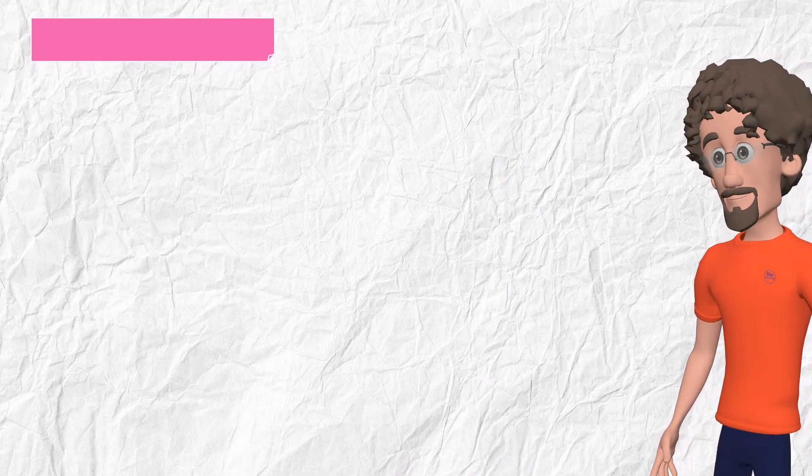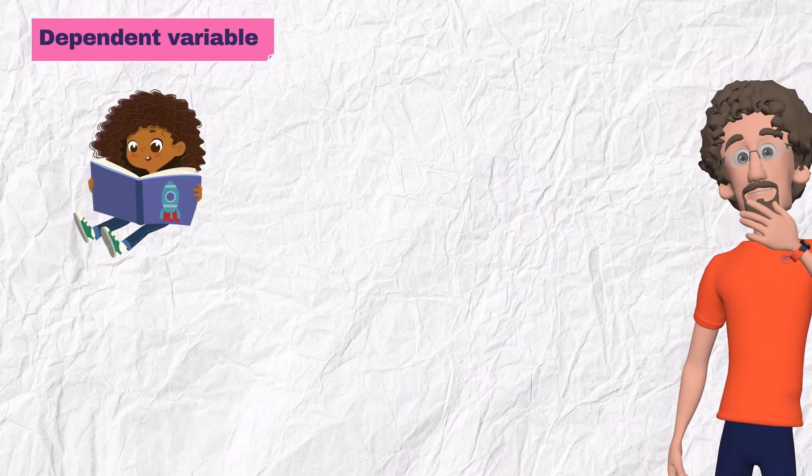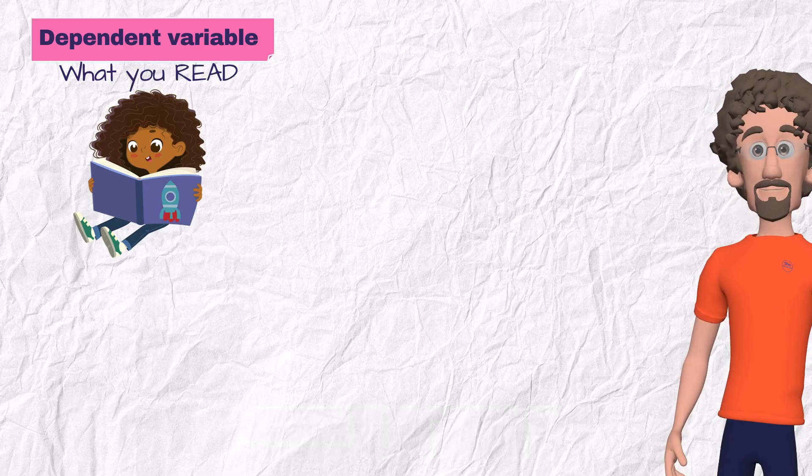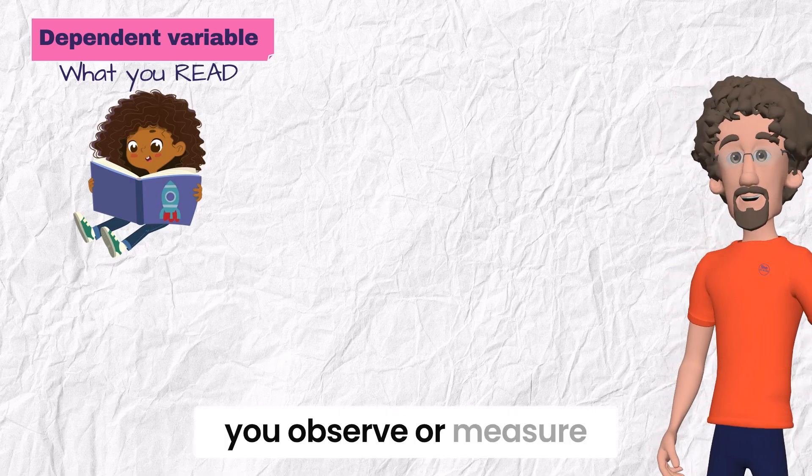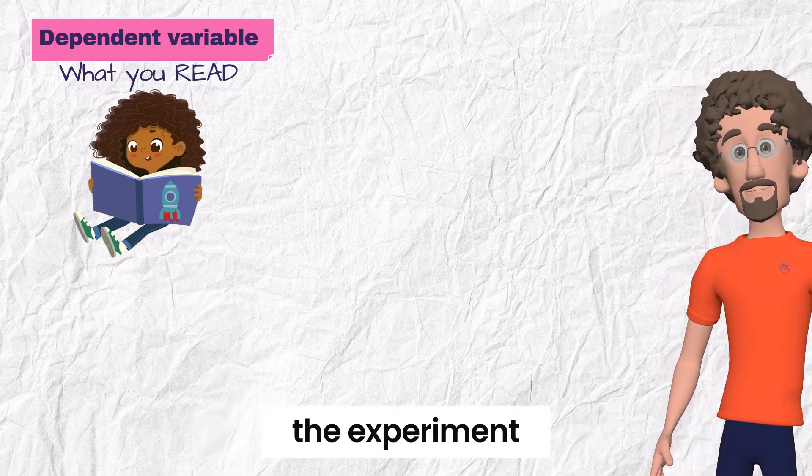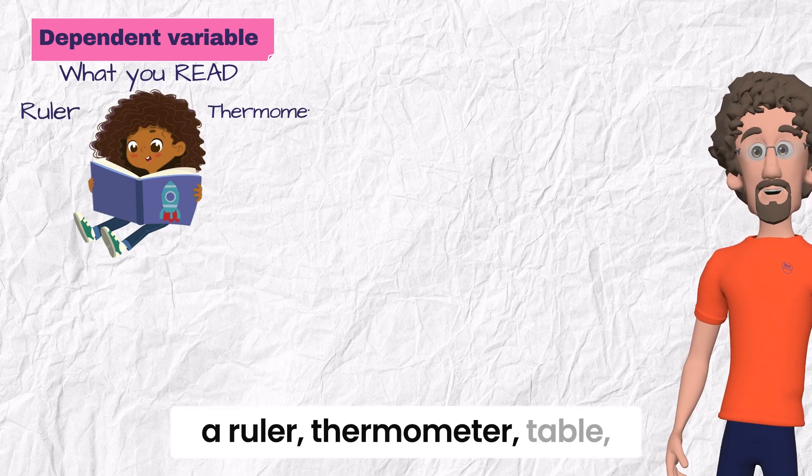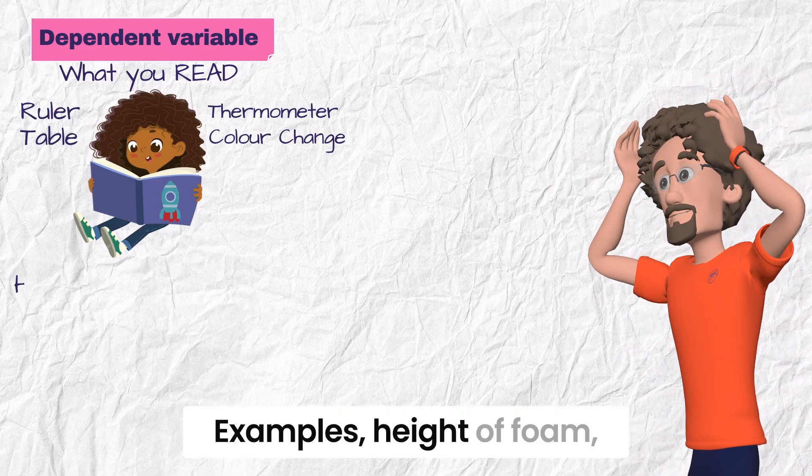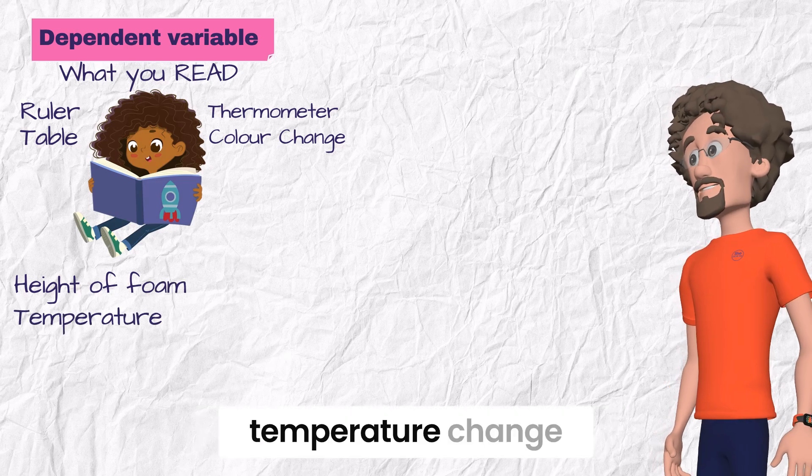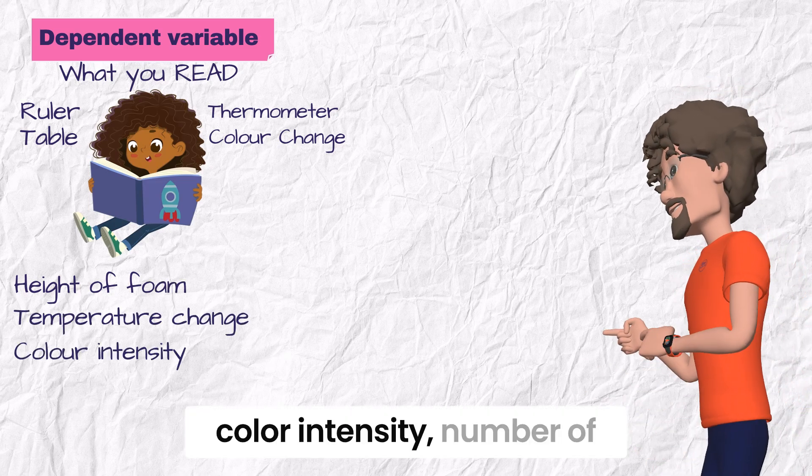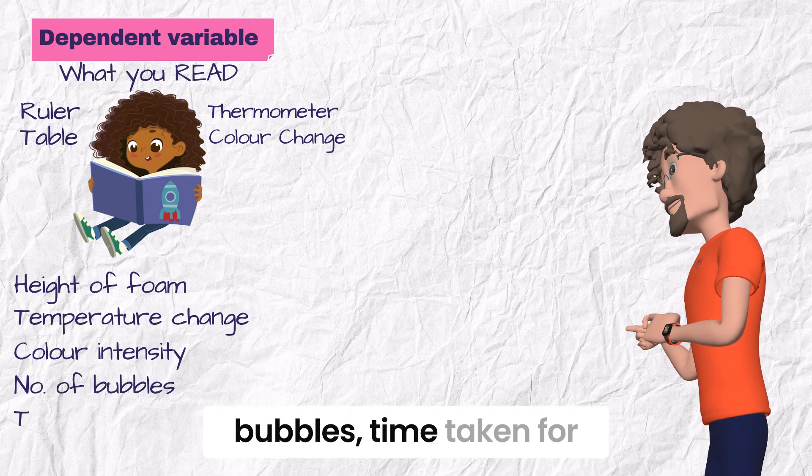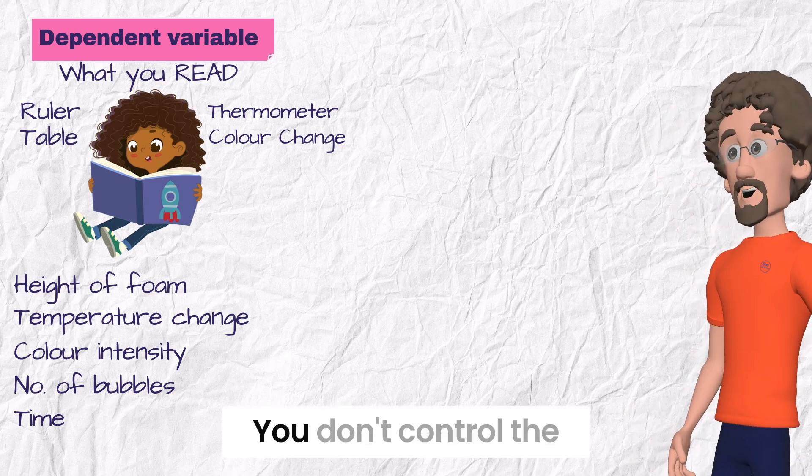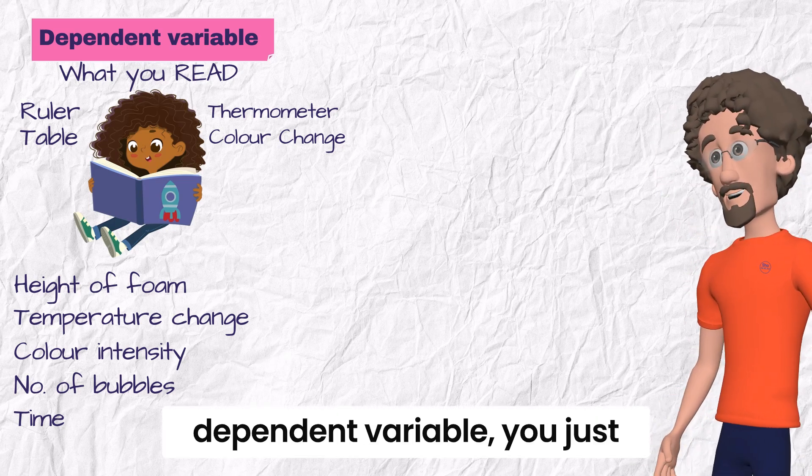Back to our rule of thumb. Number one: dependent variable is what you read. Think about the thing you observe or measure at the end of the experiment. You read it from a ruler, thermometer, table, or color change. Examples: height of foam, temperature change, color intensity, number of bubbles, time taken for a reaction. You don't control the dependent variable, you just record it.